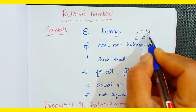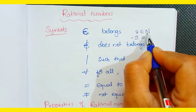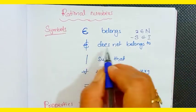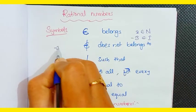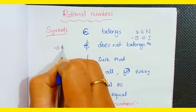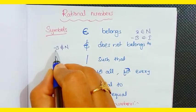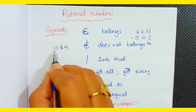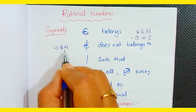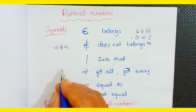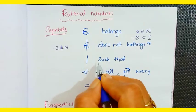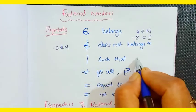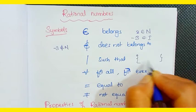A positive number belongs to natural numbers. The symbol for 'does not belong to' — for example, -3 does not belong to natural numbers. We don't have negative numbers in natural numbers. The symbol 'such that' is used in set builder form.